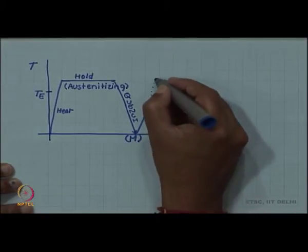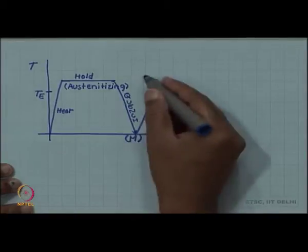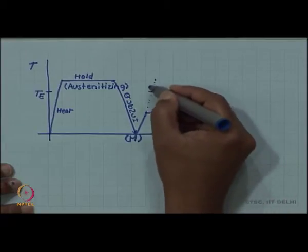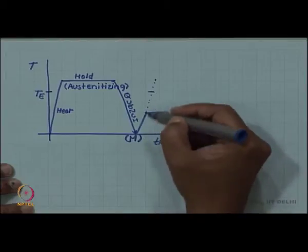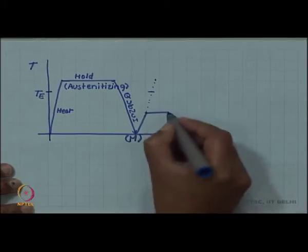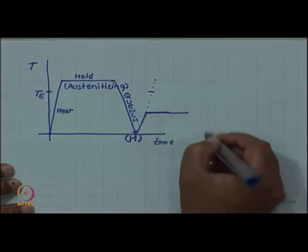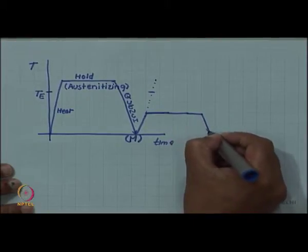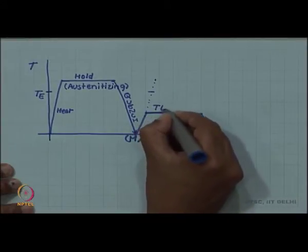If I heat it again above Te, then the whole purpose of holding and quenching was lost because we will again form austenite. So we in tempering we do not go above Te. We hold it below Te, eutectoid temperature for some time and then again cool. So this step is tempering.